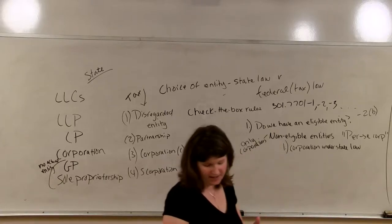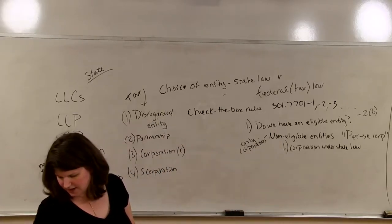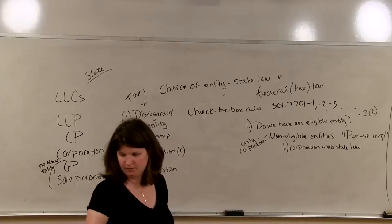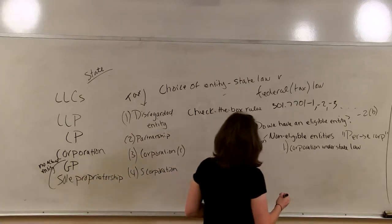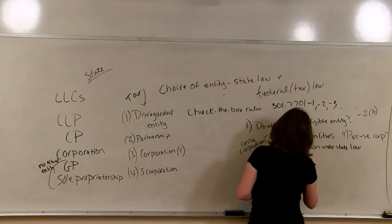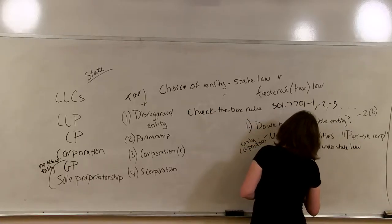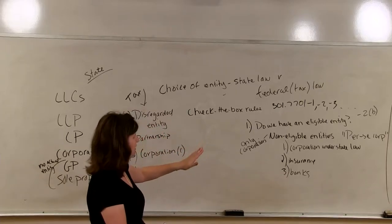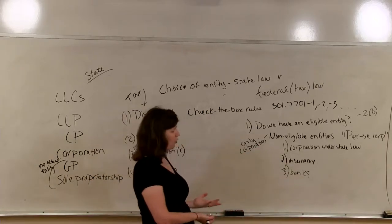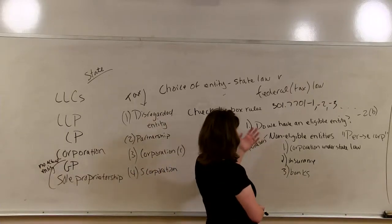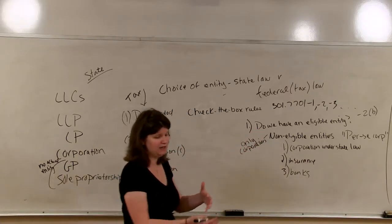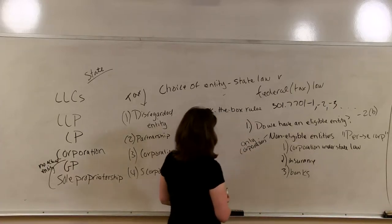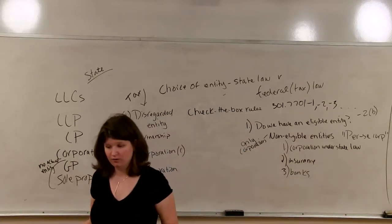The big per se corporations are: banks — specifically state-chartered businesses conducting banking activities — and insurance companies. So if we get past this analysis and determine we don't have a corporation under state law, we're not conducting banking or insurance activities, and we don't meet any of the other items on the list in the regs, then we are an eligible entity.